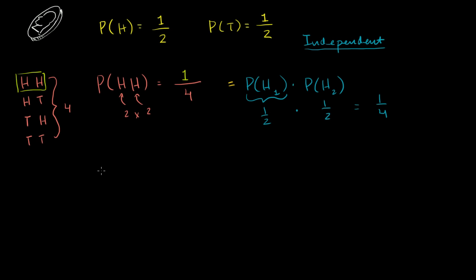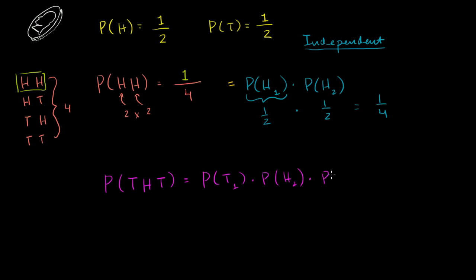Let's take it up another notch and pay attention to tails. What's the probability of getting tails, then heads, then tails — this exact sequence? These are all independent events, so this equals the probability of tails on the first flip times the probability of heads on the second flip times the probability of tails on the third flip. That's 1/2 times 1/2 times 1/2. 1/2 times 1/2 is 1/4, and 1/4 times 1/2 equals 1/8.